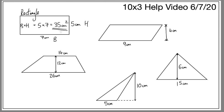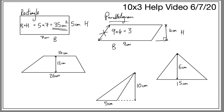A parallelogram follows exactly the same rule. The base is nine, the height of the shape is four. We're talking about the perpendicular height — what we're not interested in is the slant height, that doesn't help us work out the area. We only want the vertical height, the height that goes straight up. So in this case we do nine times four, which gives me 36 centimeters squared. That works with parallelograms and rhombuses.